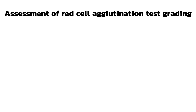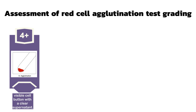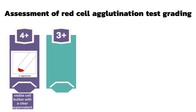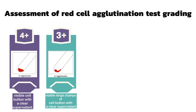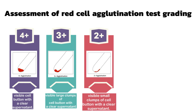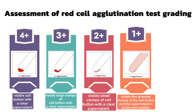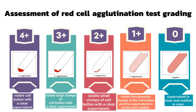Grading of red cell agglutination: 4+ (complete) means macroscopically visible cell button with a clear supernatant. 3+ means large clumps with a clear supernatant. 2+ means small clumps with a clear supernatant. 1+ means fine granular clumps with a turbid, reddish supernatant. 0 means no agglutination, with a clear reddish supernatant. MF (mixed field) indicates a mixture of agglutinated and unagglutinated red cells.